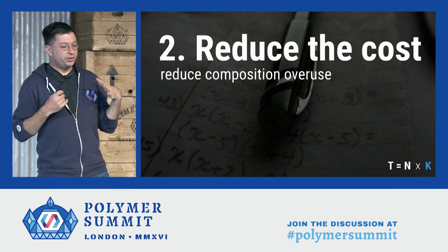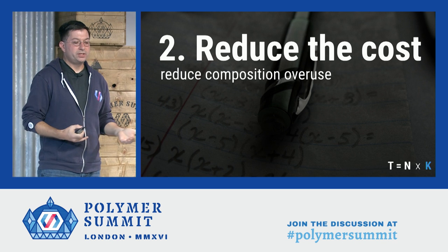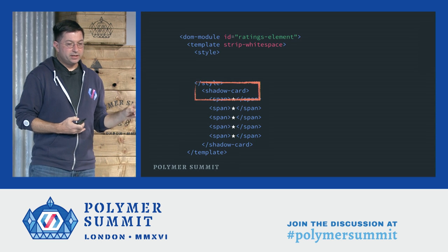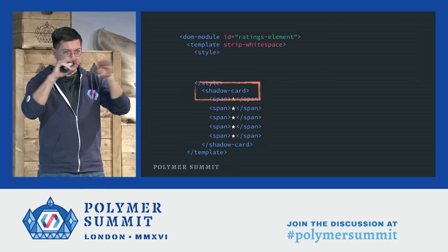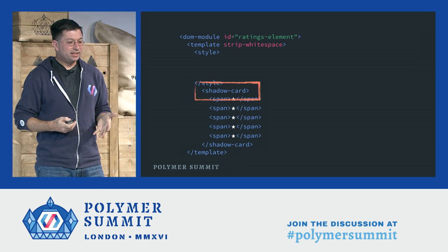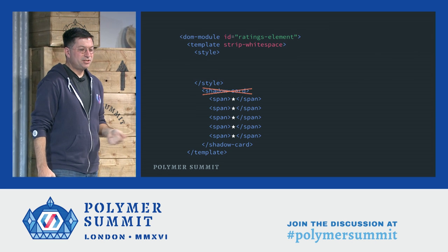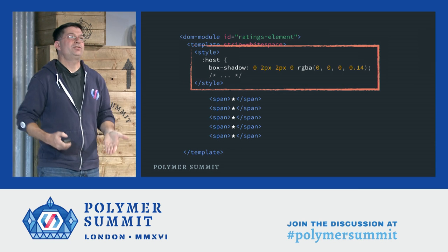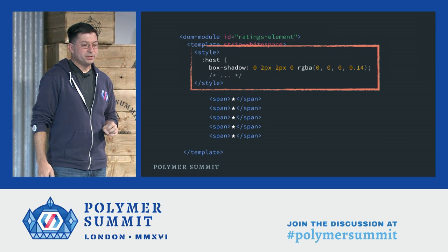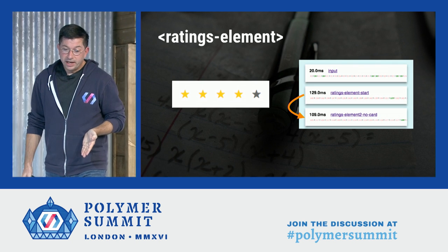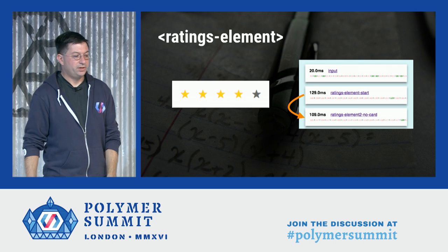The first technique is looking at our use of composition. In this high-frequency element we want to be careful about composition. In general composition is great, but when you're really trying to squeeze the fat out of an element, scrutinize it carefully. We used an element called shadow-card just to give the element a drop-shadow border outline. That's probably a little heavyweight to accomplish that end. Doing this in CSS is actually pretty straightforward. Let's use the platform more directly with CSS, and we get a nice little improvement — a good reason not to overuse an element where CSS can do the heavy lifting.